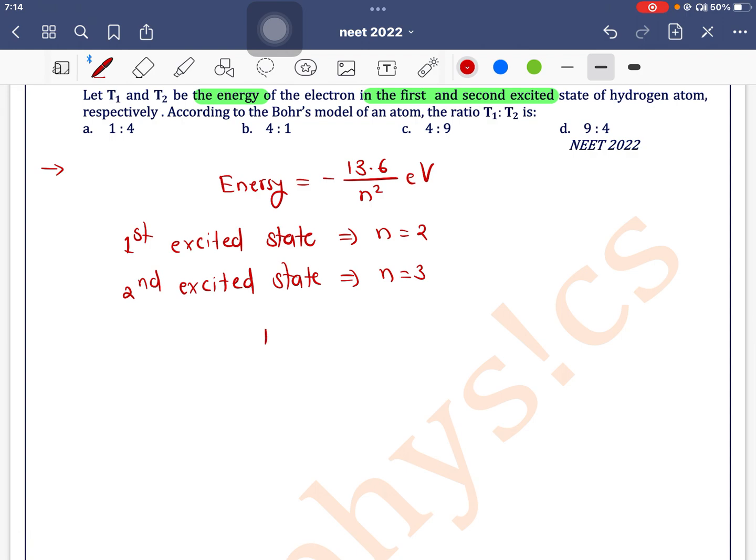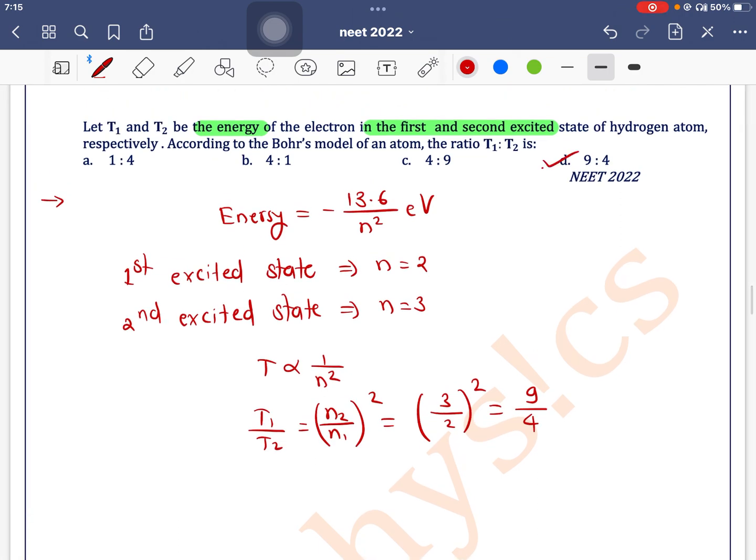So we can write T is inversely proportional to n square, so T1 by T2 is equal to n2 by n1 whole square, which is equal to n2 is 3, n1 is 2, square. 3 square is 9, 2 square is 4, 9 by 4 means option D is the correct one.